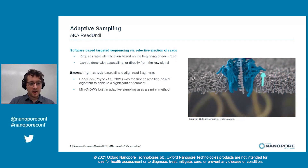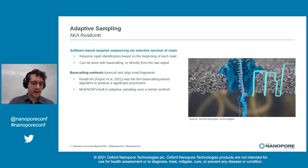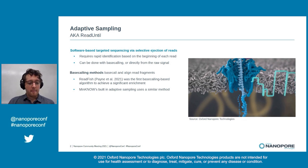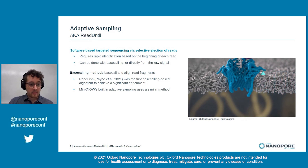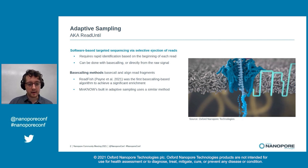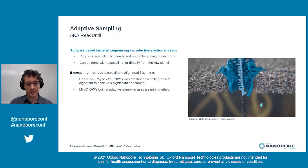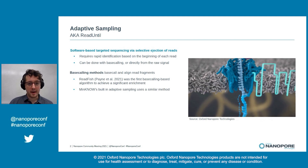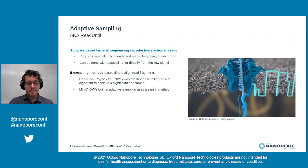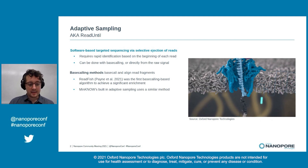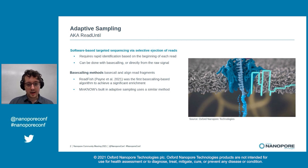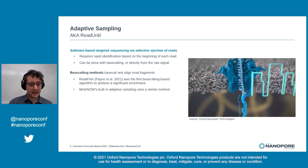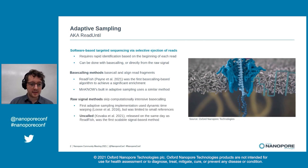The first approach is base calling read fragments and aligning them with a standard DNA aligner. The first method which got this to work really well was ReadFish, released about a year ago, and then shortly after, ONT implemented a similar method directly into MinKNOW. The main bottleneck with these types of methods is the base calling step itself, which is quite computationally intensive.